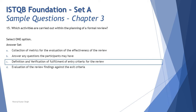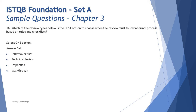Question number 16: which of the review types below is the best option when the review must follow a formal process based on rules and checklist? They are giving you the characteristics of the review type, and you need to identify which one uses rules and checklist. You don't even need to look at the options — only the knowledge you have gained during your learning will help you get the right answer for such questions.